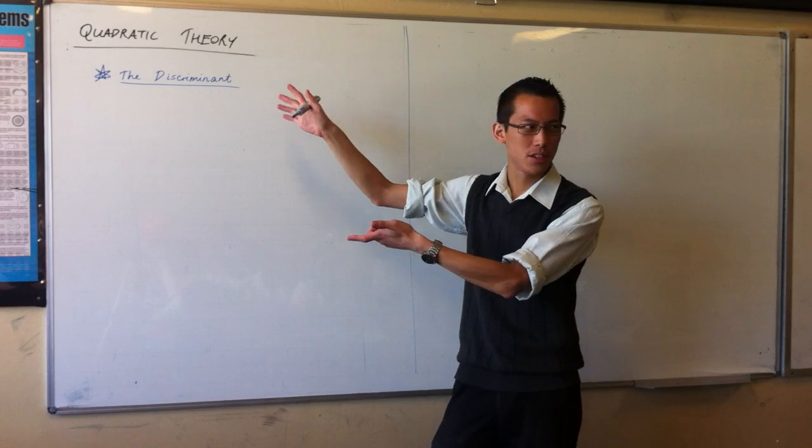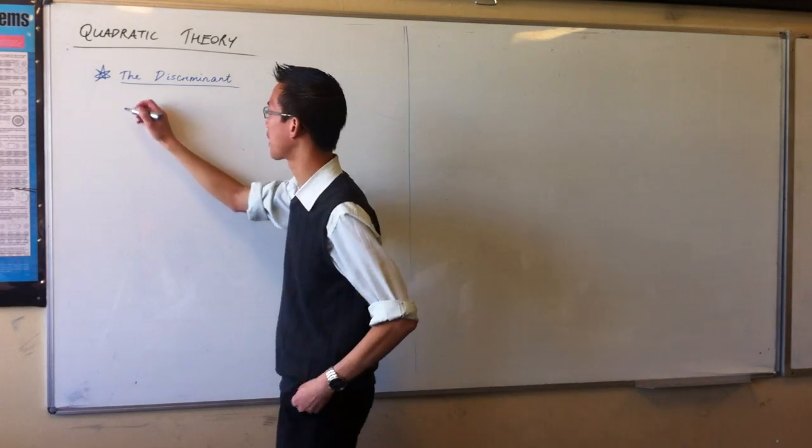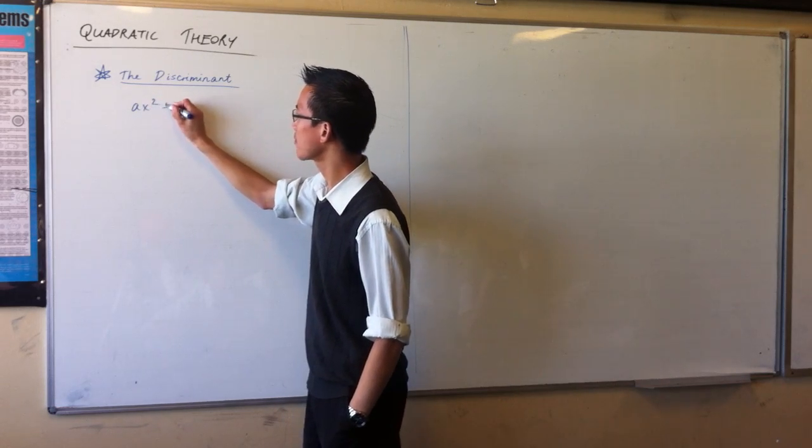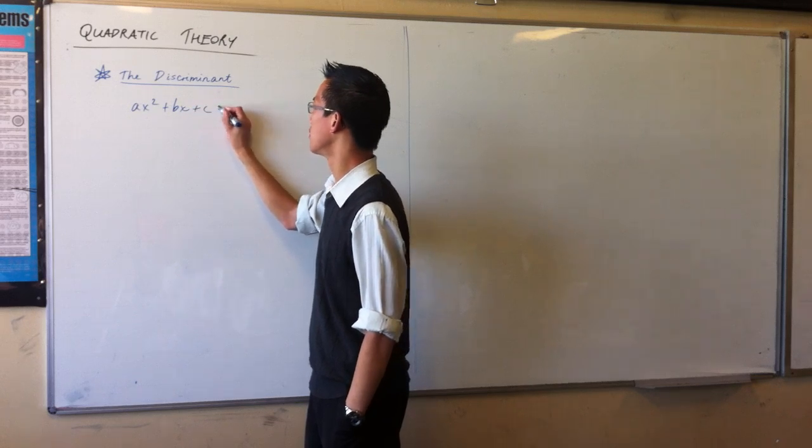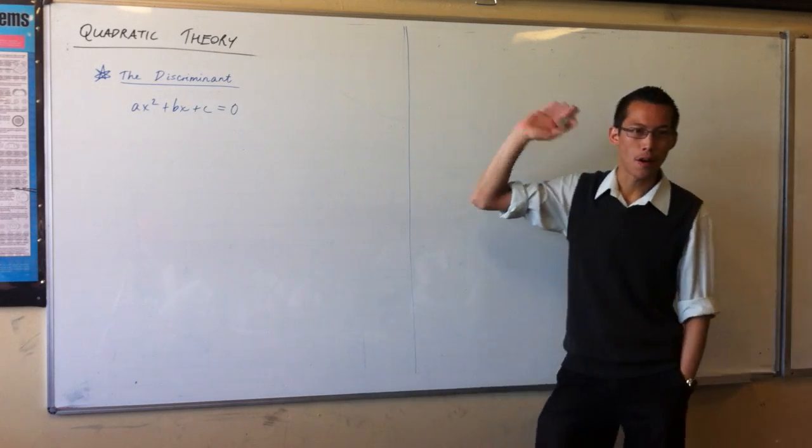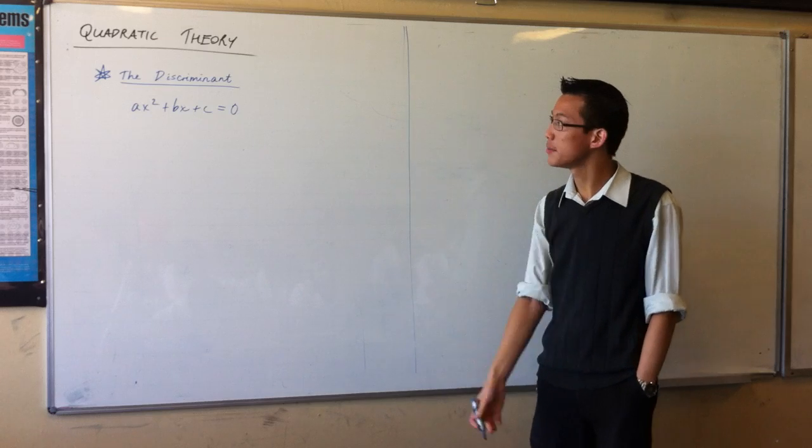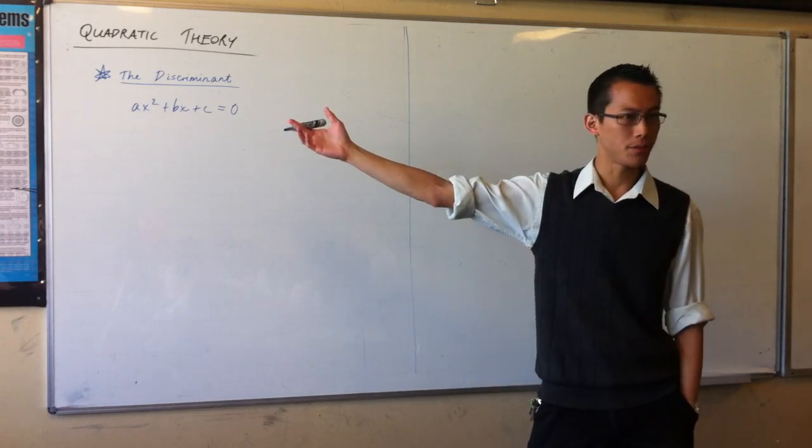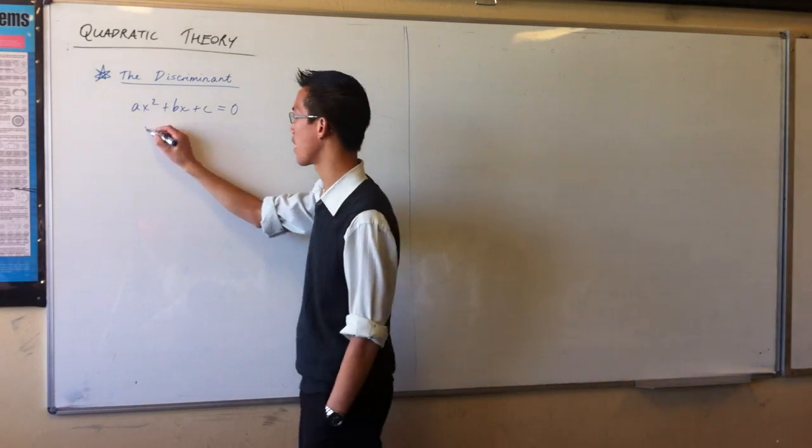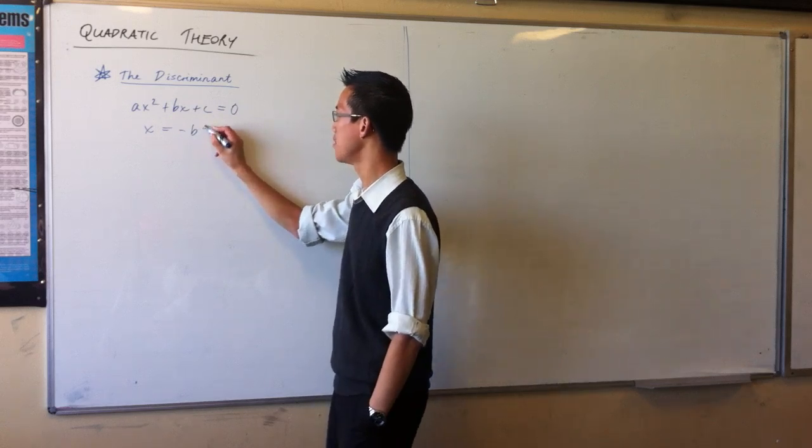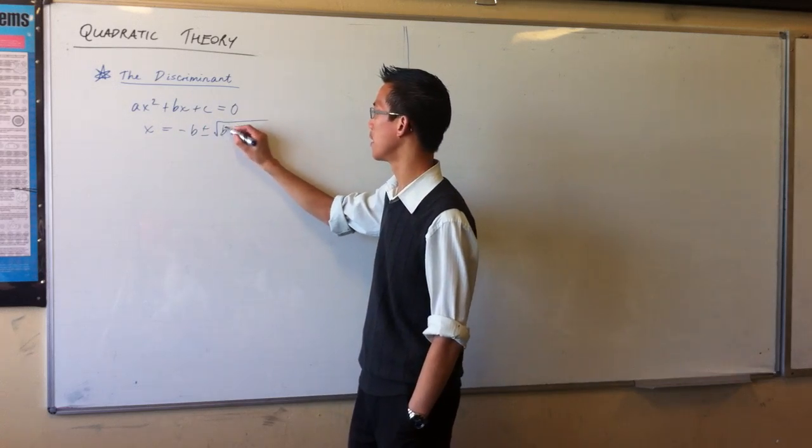So, to understand what the discriminant is, you've got to come back to quadratic formula. Quadratic formula tells you for any given quadratic equation that is in general form, you can express its roots in this way, and you guys have learnt this formula to death.